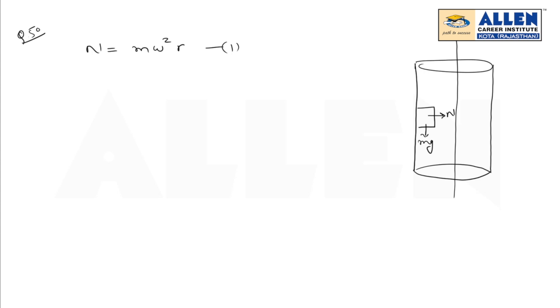Here I can write the value of friction. If the block remains stationary with respect to the cylinder, the value of limiting friction should be greater or equal to the weight, that is mg.